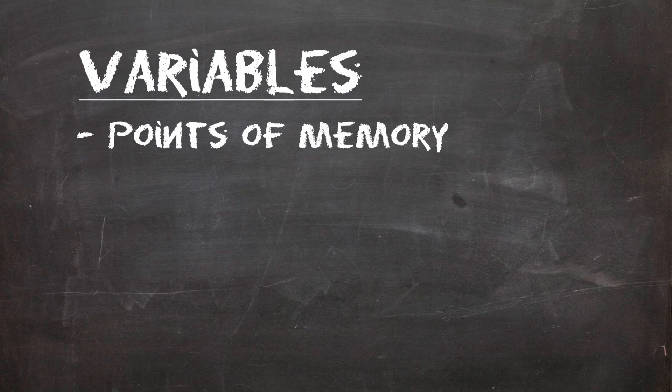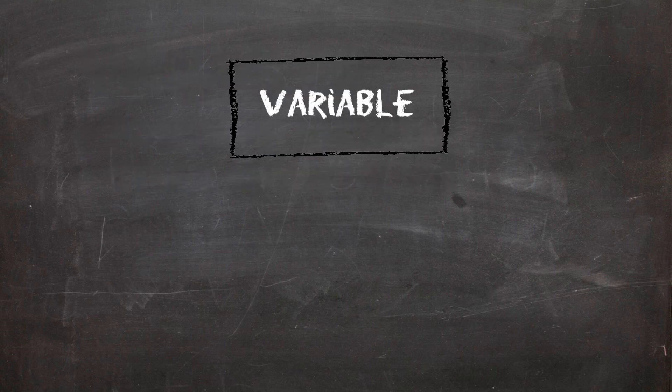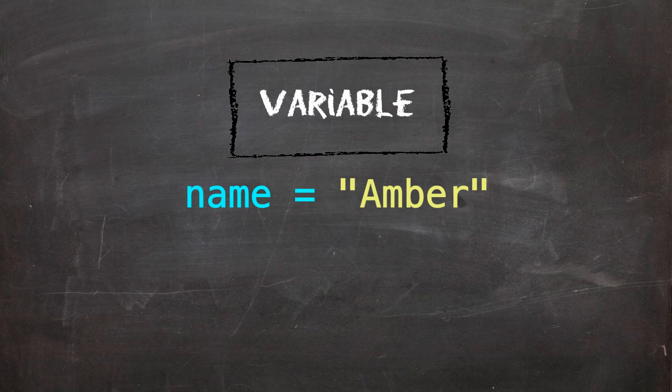Programming languages make use of something called variables. They're tiny little points of memory which we can save information to. To create a variable, we give it a name, and set it using an equals operator. We then follow that equals operator with a bit of data that we want to stick inside it.